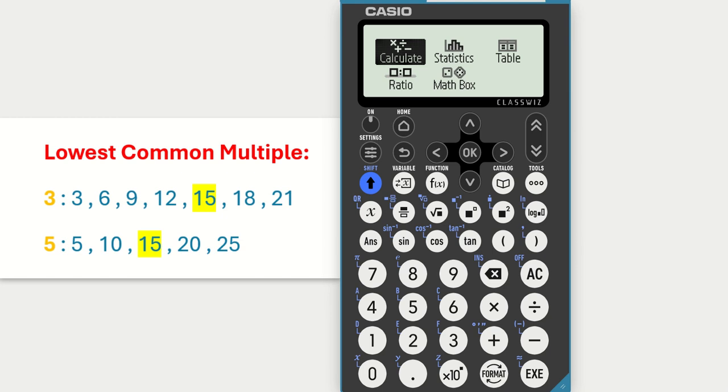On the left hand side here, I've just outlined what lowest common multiple is doing. So we're going up in multiples of two numbers.